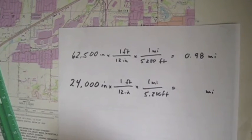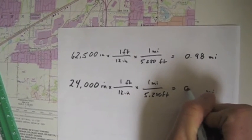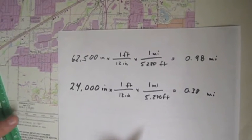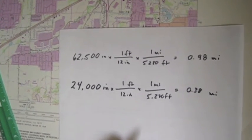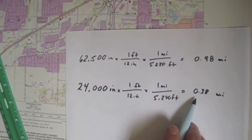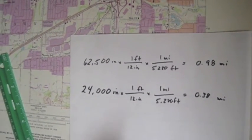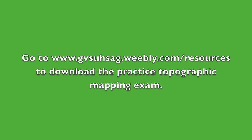And so I think it's 0.38. So at a fractional scale of 1 to 24,000, it ends up having a verbal scale of 1 inch equals about 0.38 miles. I'll see you next time.